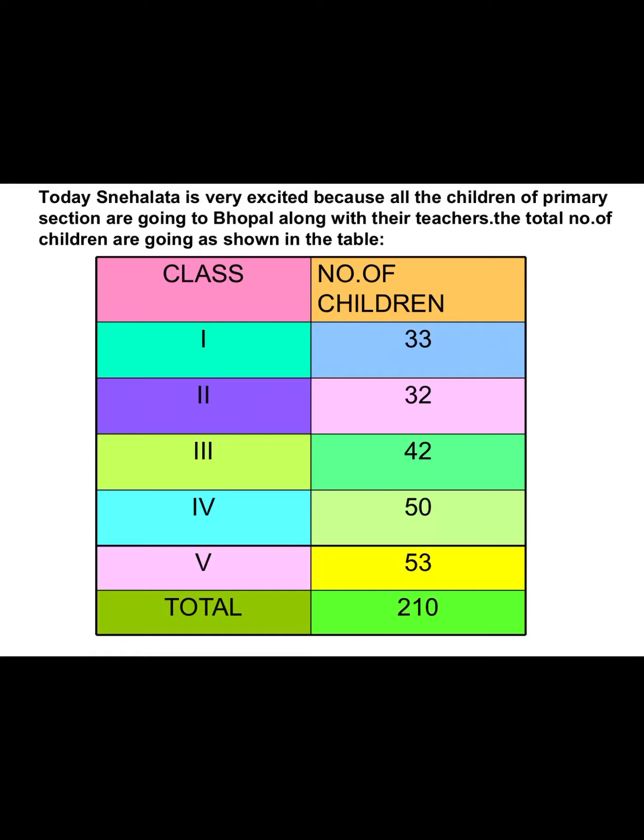Look at the table carefully. For class 1, the total number of children going is 33. From class 2, 32 children are going. From class 3, 42 children are going. From class 4, 50 children are going. From class 5, 53 children are going. So what is the total number of children? Yes, it is 210.